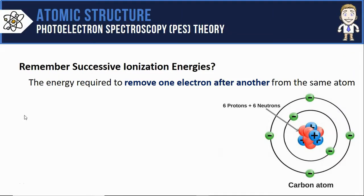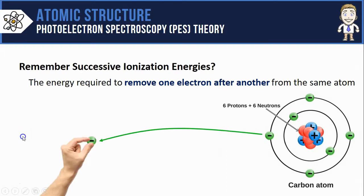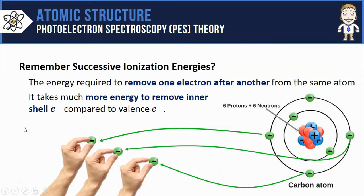First, remember that successive ionization energies refers to the energies required to remove one electron after another from the same atom. So on my carbon atom if I removed one electron and measured the energy it took, I'd be measuring the first ionization energy, or the second, or the third and so on. And you can see all sorts of patterns in doing this, like that it takes more energy to remove inner shell electrons compared to the valence ones.